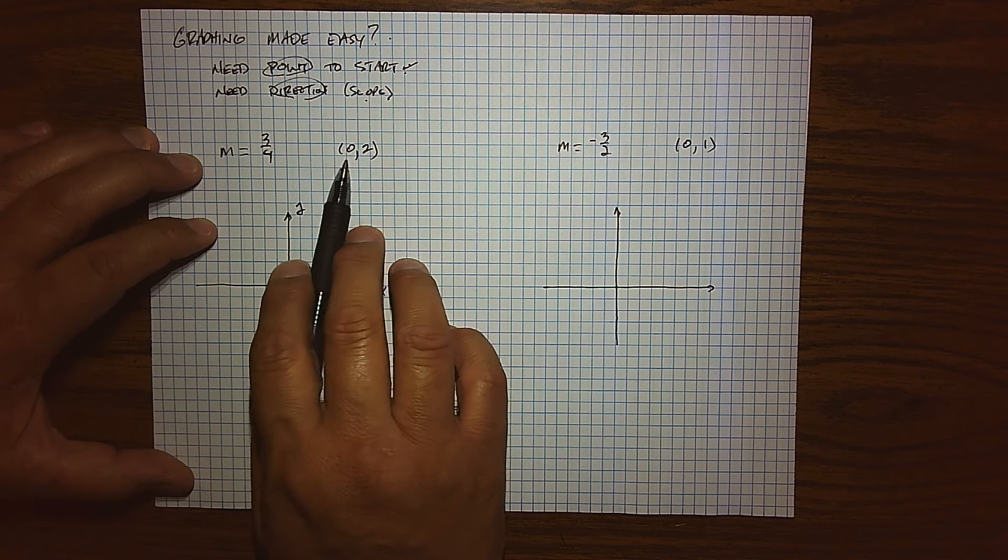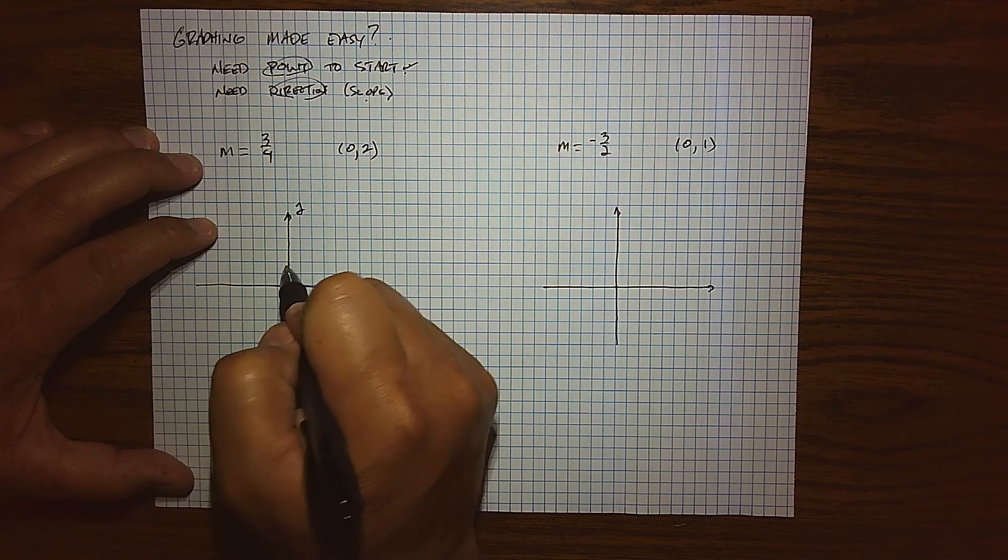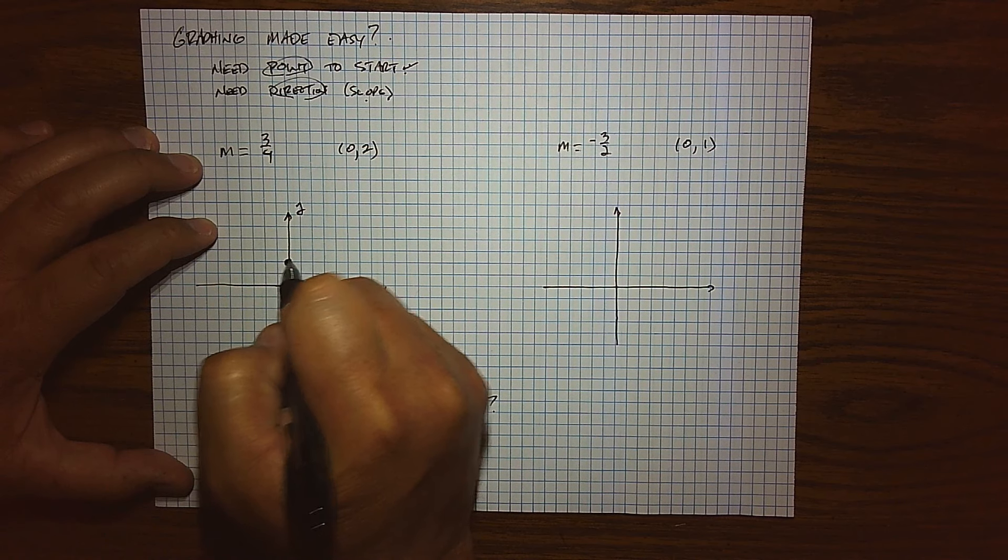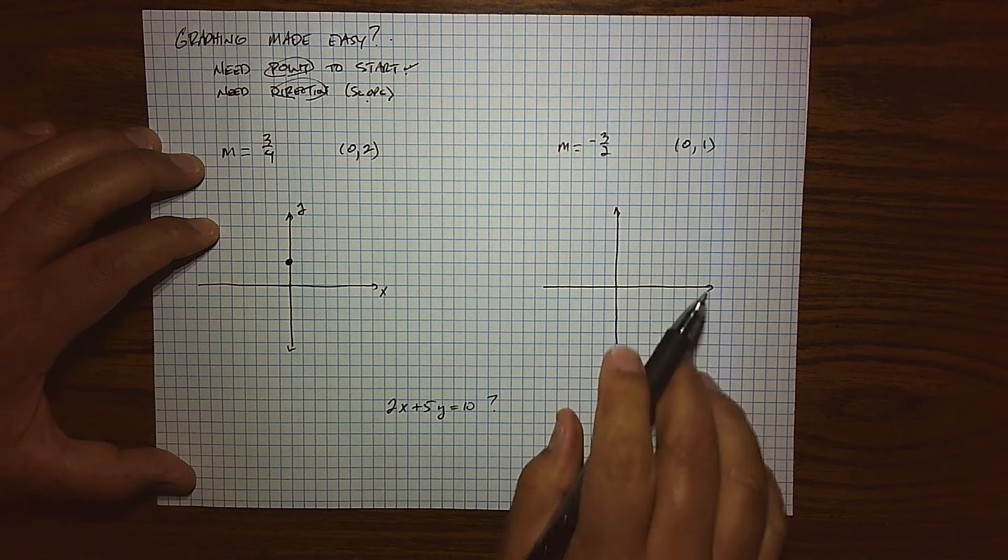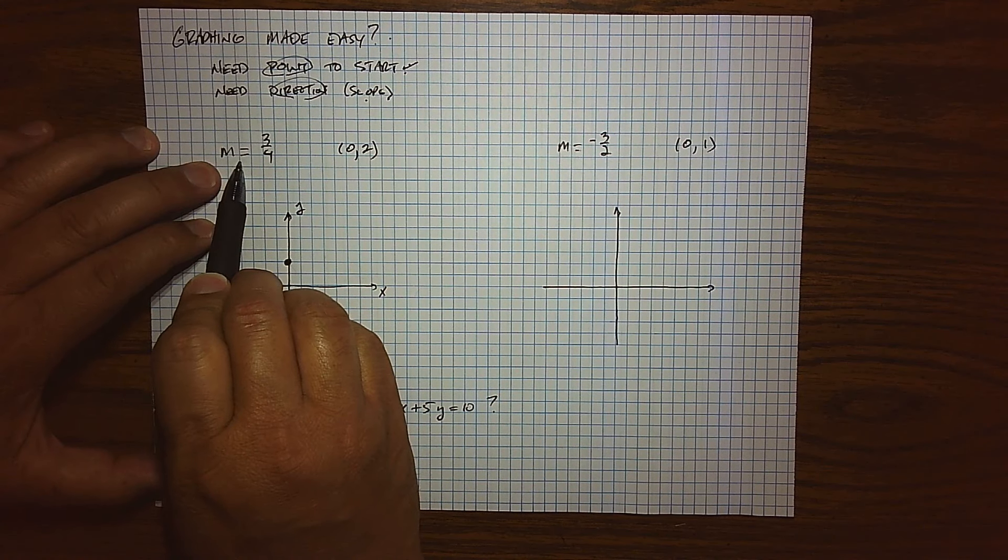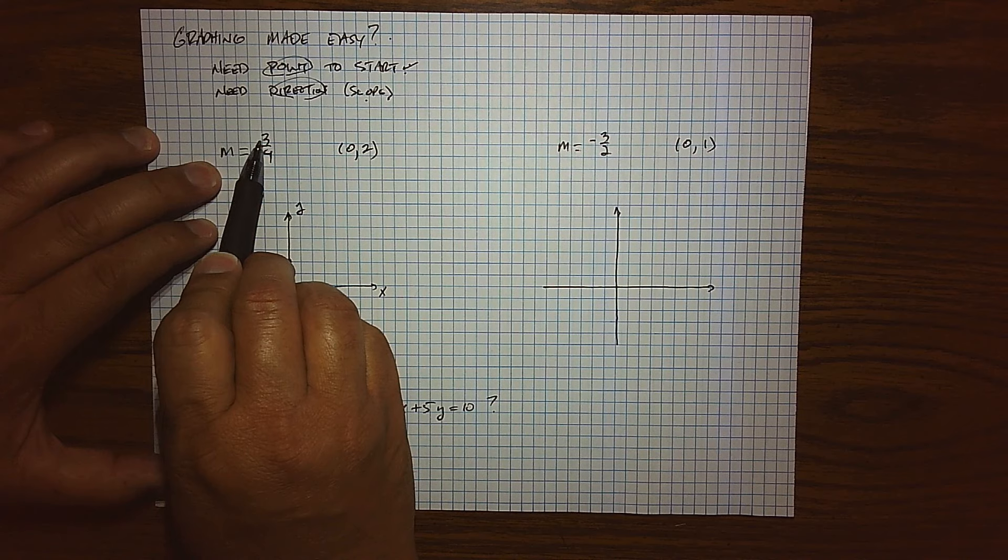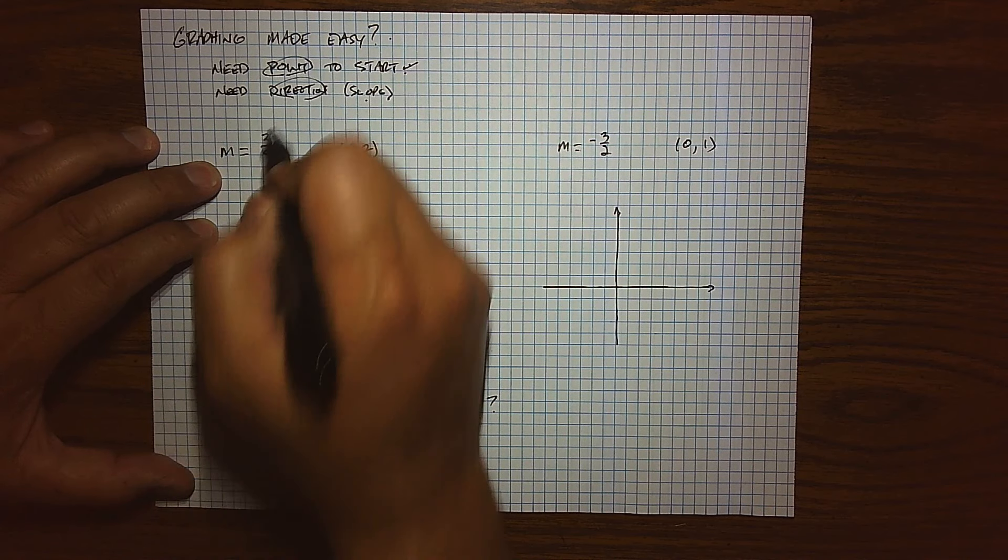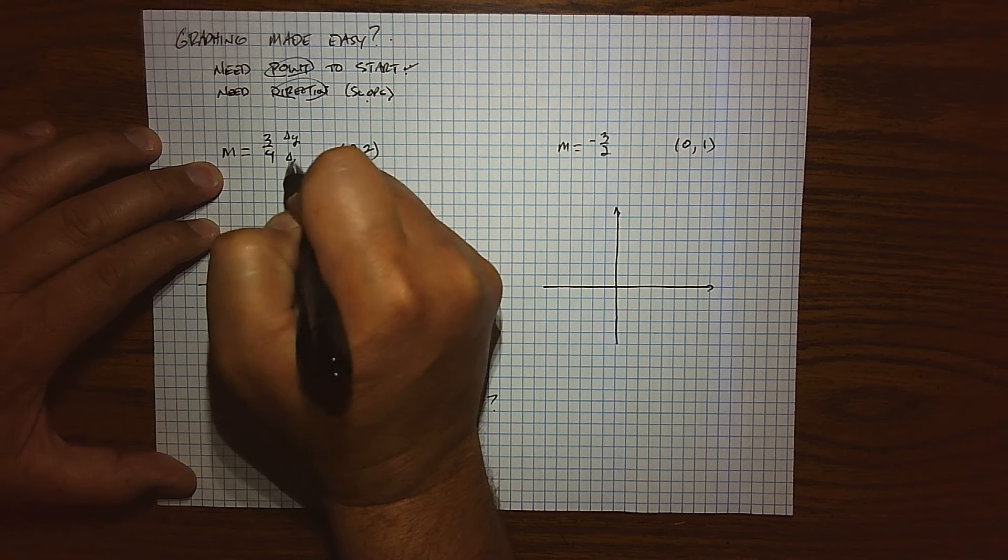Well, we're going to start at the point (0, 2). So on my grid, (0, 2) is right there. So how do I move to another solution point? Where do I get to another point on the graph? Well, this slope is telling me that my change in y is 3, and my change in x is 4.